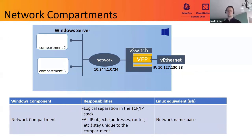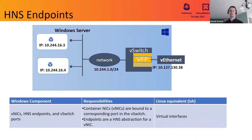Network compartments are a quasi-equivalent of network namespaces on Linux. A network compartment on Windows receives its own port pool, and all network interfaces and IP addresses are unique to the given compartment. Each Kubernetes pod receives its own unique network compartment. Endpoints are a quasi-abstraction for a VNIC — they contain information about IP addresses, gateway, DNS server, and such things. Container VNICs are bound to a corresponding port in the vSwitch in order to enable networking.